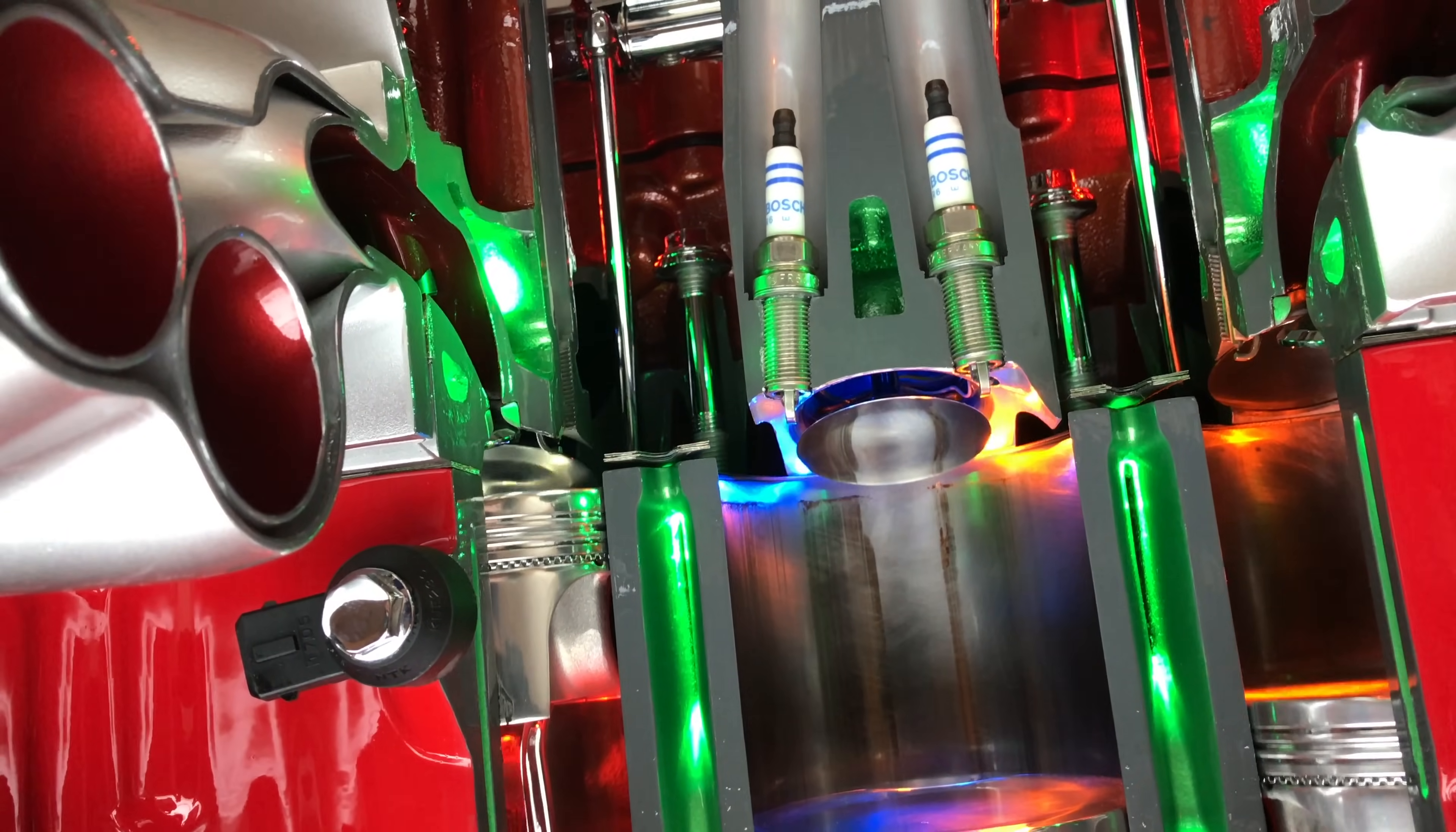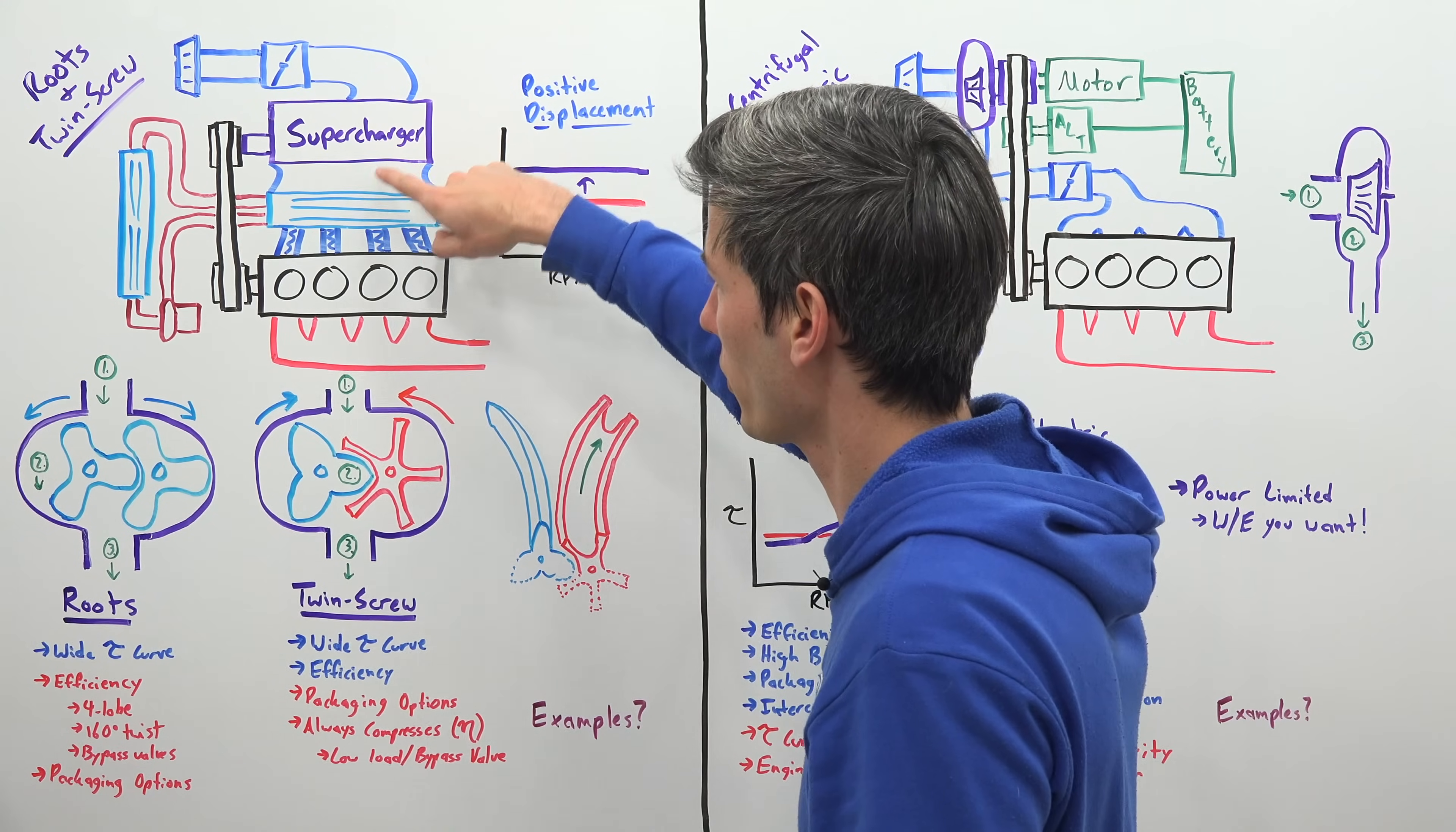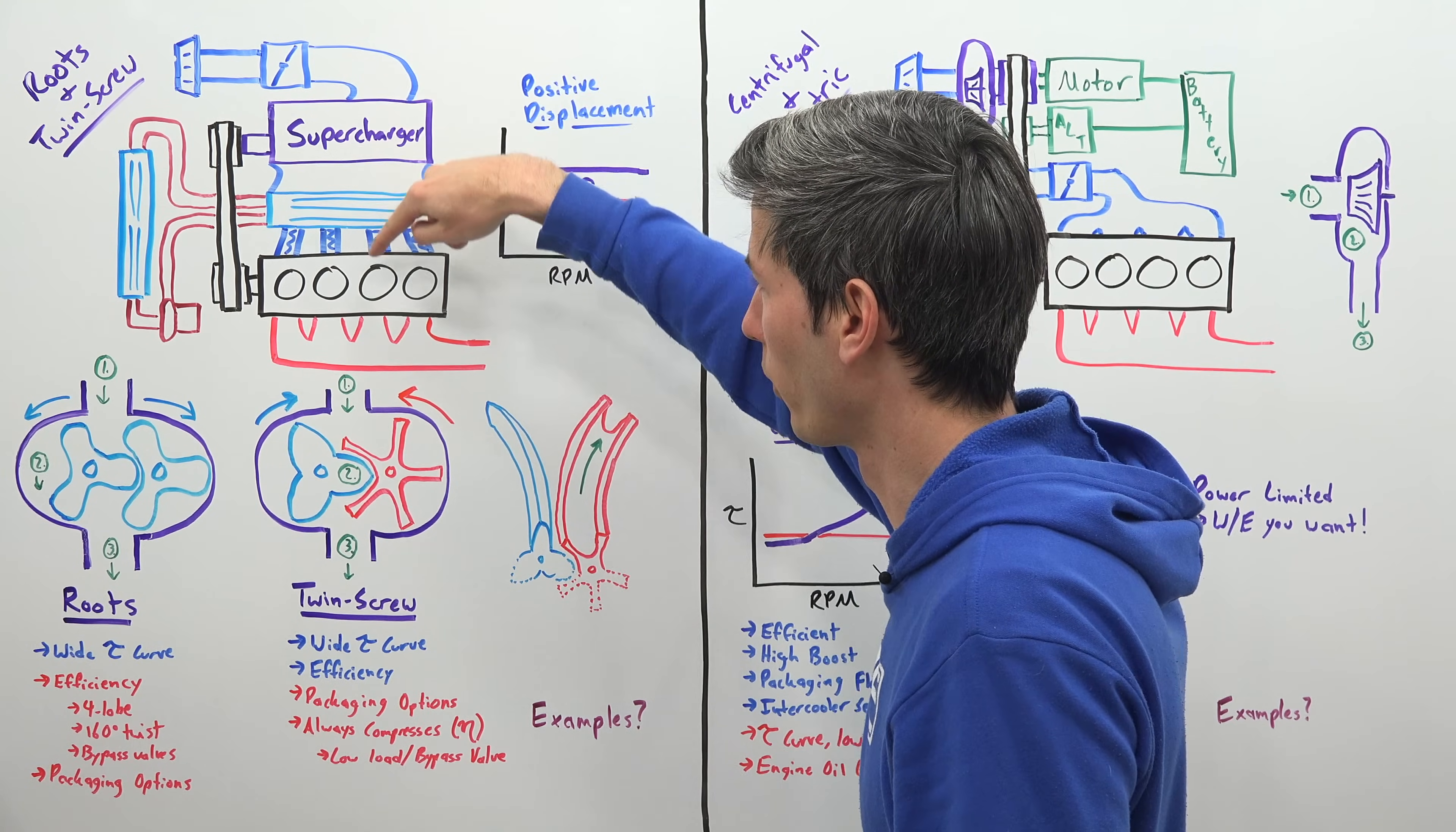So to start off, let's look at Roots and Twin Screw style superchargers as the overall layout of them is fairly similar. You'll have your air come in through the intake, pass through the throttle body, travel through the supercharger which is driven off a belt from the engine - that's what's going to be rotating this compressor. Then that air is sent through an intercooler,